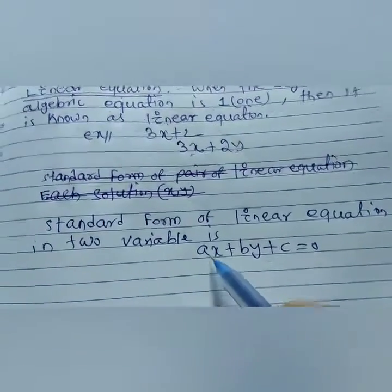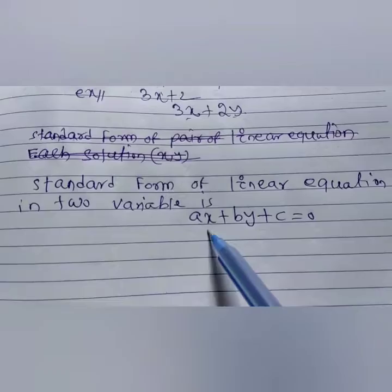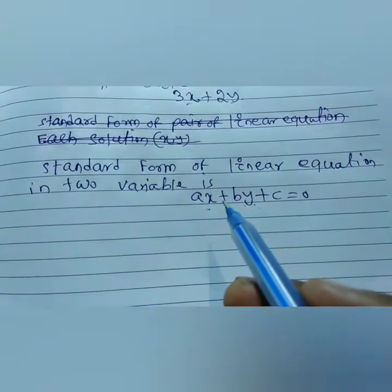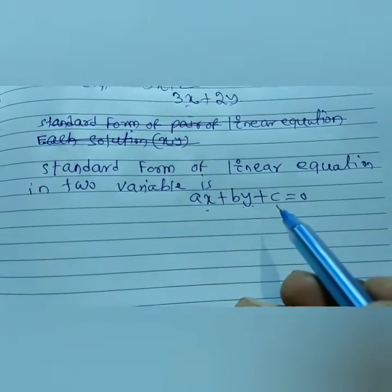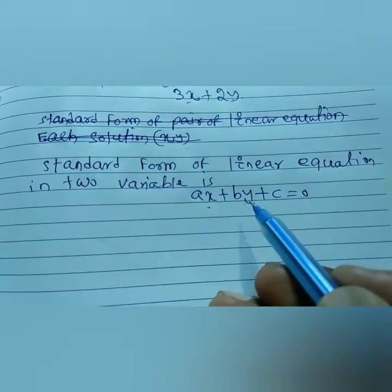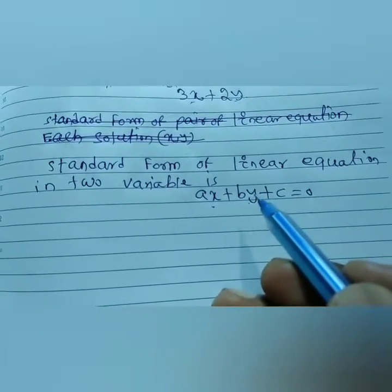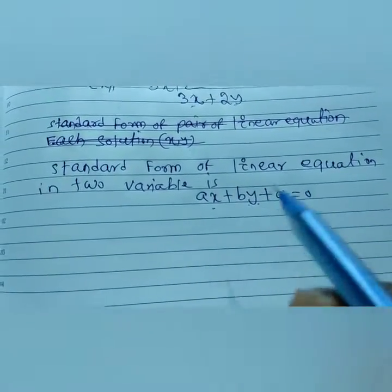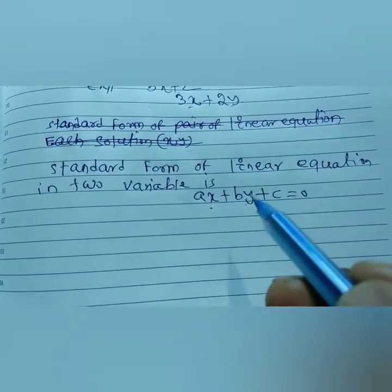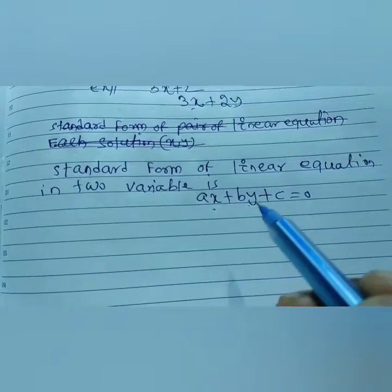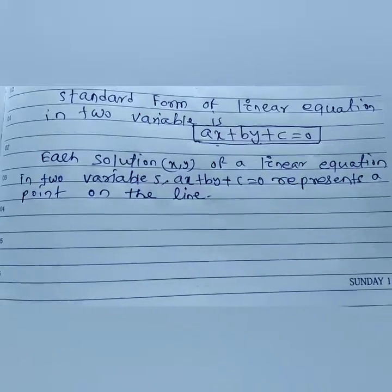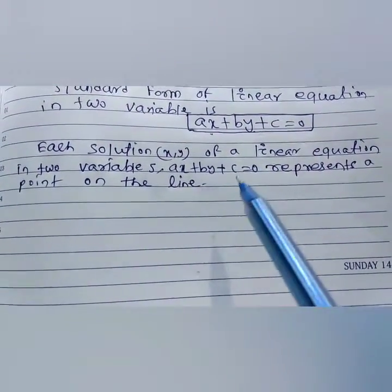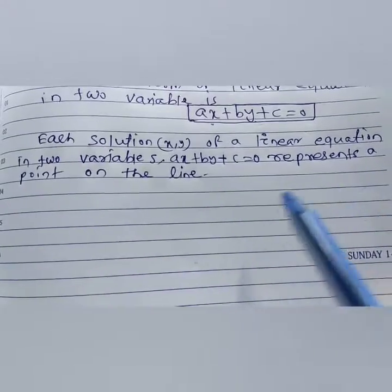In this standard form, 'a' is the coefficient of x, 'b' is the coefficient of y, and 'c' is the constant. The solution of this expression — that is, the values of x and y — lies on a line. The solution of these equations is a point on the line. Each solution (x, y) of a linear equation in two variables ax plus by plus c represents a point on the line.